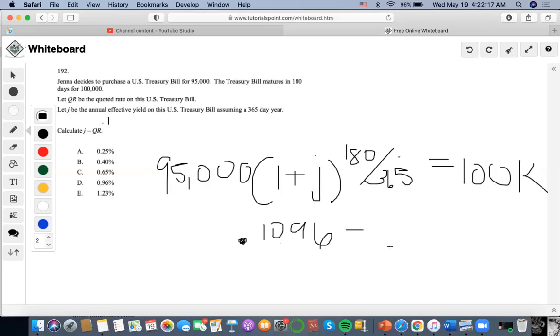And I'm going to subtract it from the quoted rate that I found here, so I have 0.1, and then I'm going to end up getting 0.0096, which will end up being 0.96 percent. Thanks.